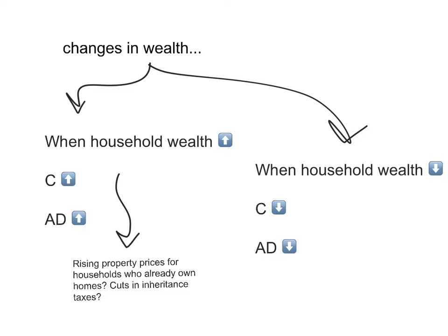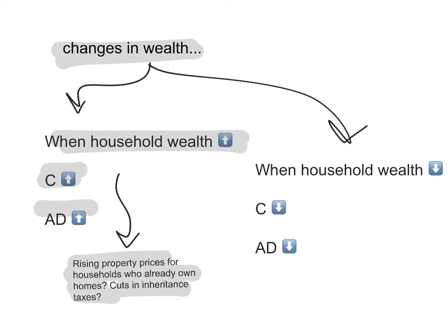The third factor that causes changes in consumption spending and hence shifts the aggregate demand curve is changes in wealth. When household wealth increases, consumption spending tends to increase and therefore aggregate demand increases, shifting the curve to the right. When household wealth decreases — for example due to falling property prices or rising inheritance taxes — consumption spending tends to fall and aggregate demand decreases, shifting the curve to the left.